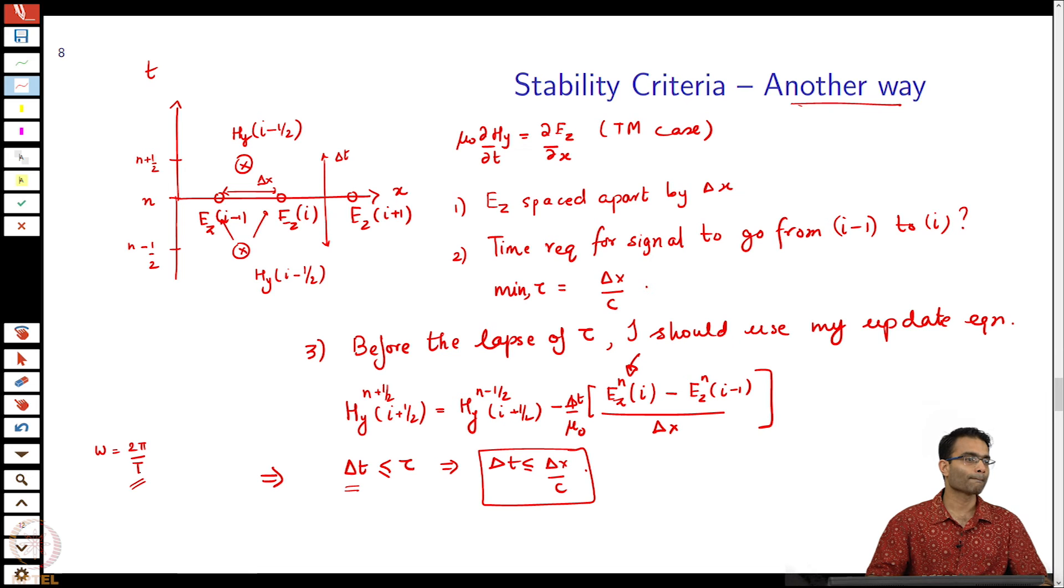For example, supposing you are at microwave 1 gigahertz. 1 gigahertz is 10 to the 9. What is the time period there? 10 to the minus 9 and 1 by c is going to give you again small numbers. Delta t looks like a very small number, but when seen in relation to the time period of the wave it is not going to be some microscopic fact. This is the intuitive way of arriving at this stability criteria.